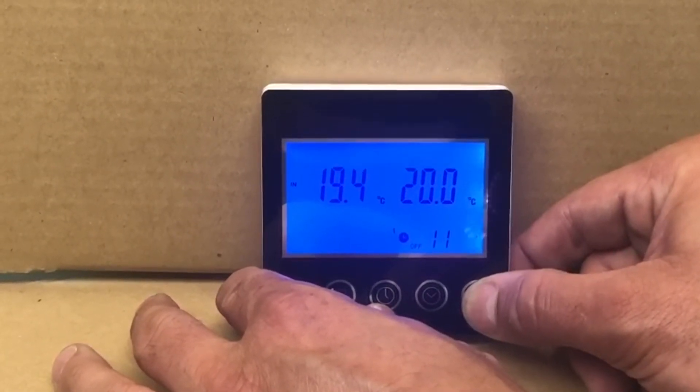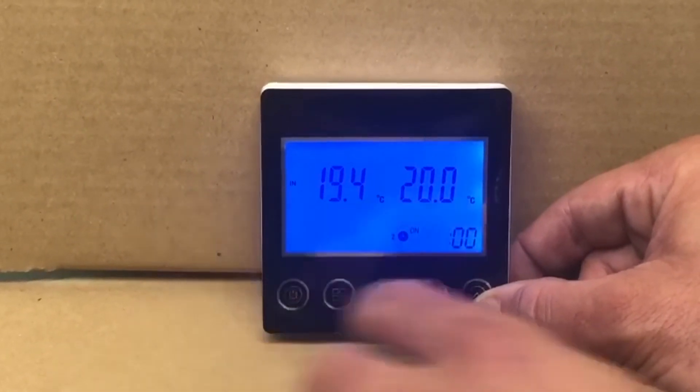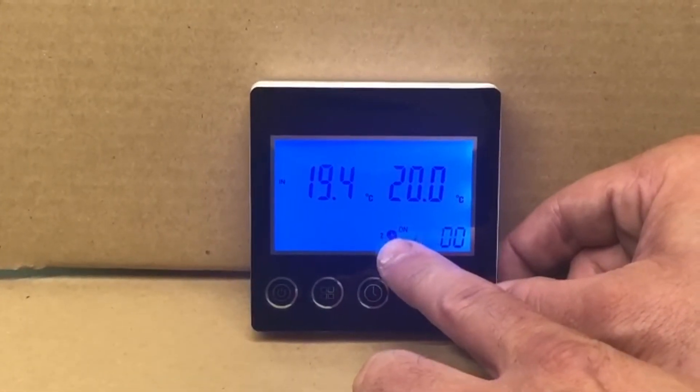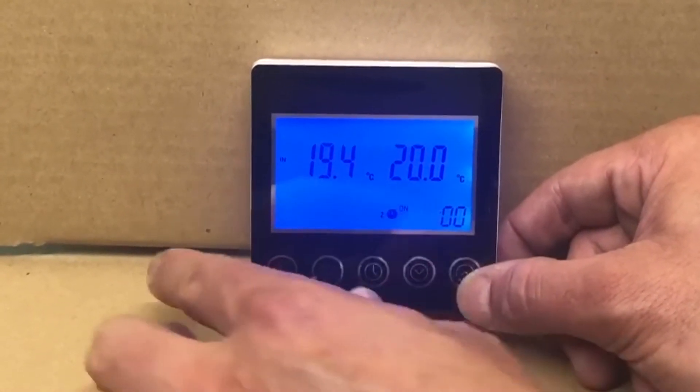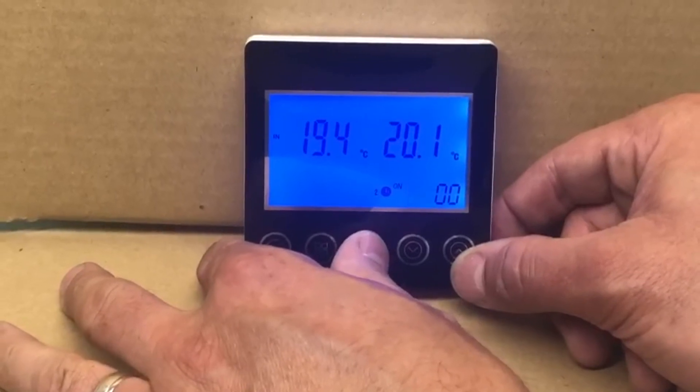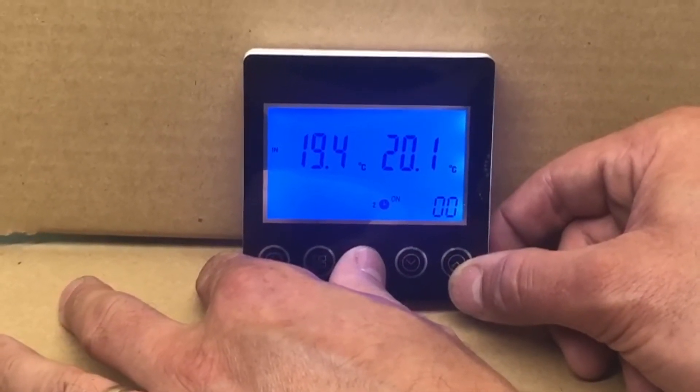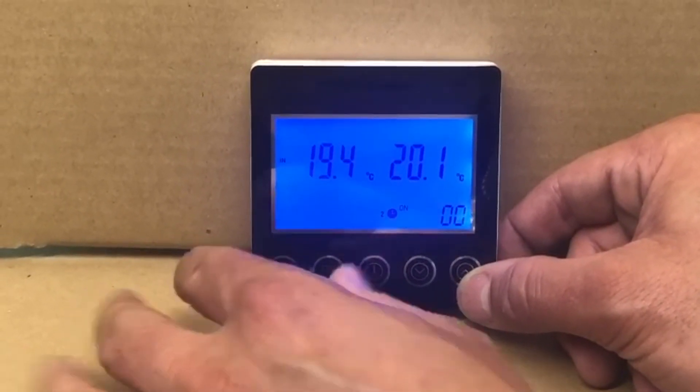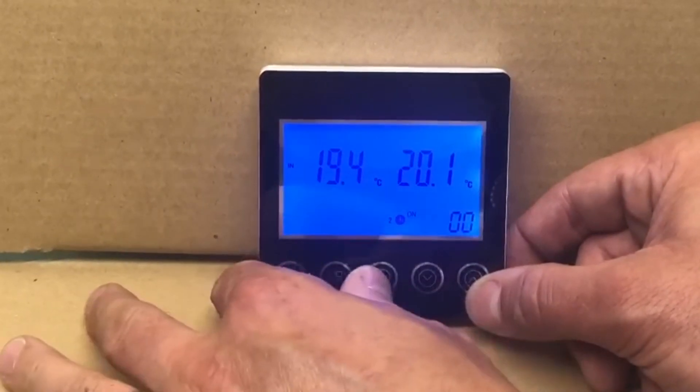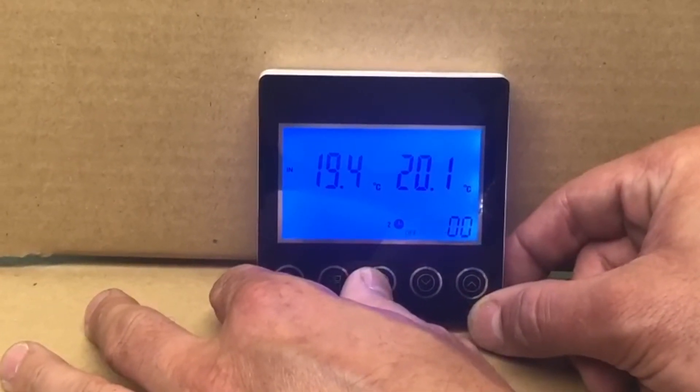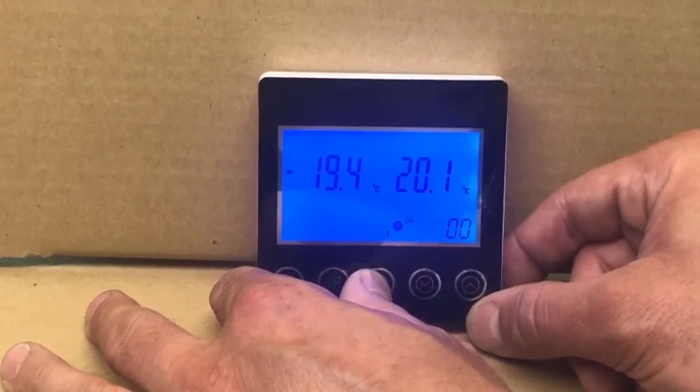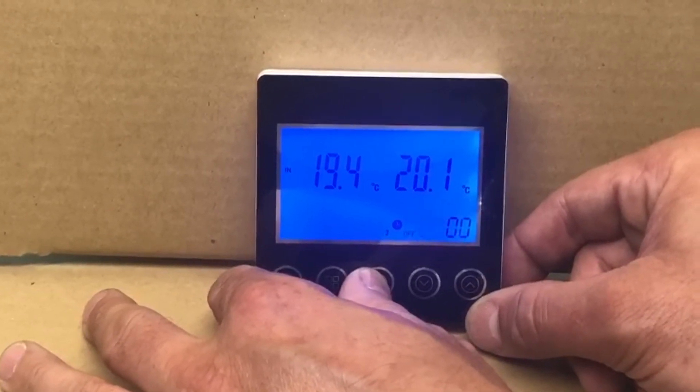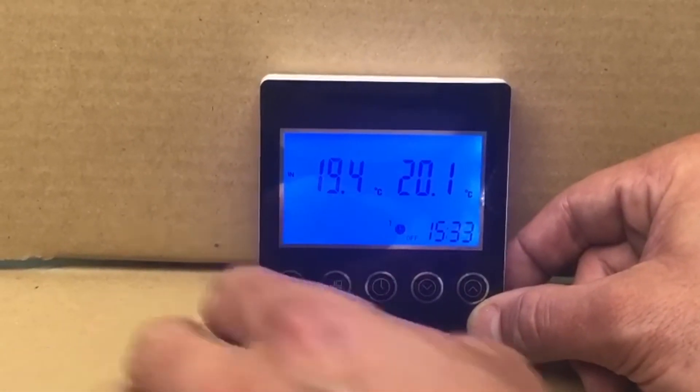If we don't want timer two to be set, we would just go through without setting it, leaving it at zero zero. If we want to set it, we do it in the same way. I'm just going to leave them all the same. We can do the same with the third timer and we're done.